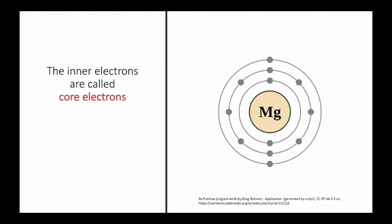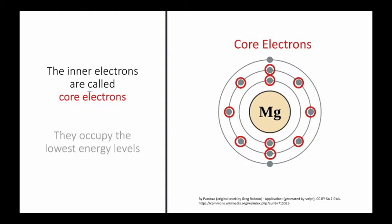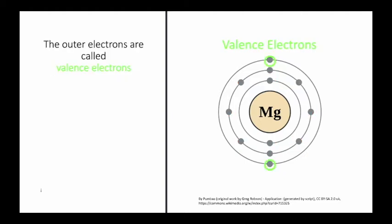The inner electrons are called core electrons. They occupy the lowest energy levels. The outer electrons are called valence electrons, and they occupy the highest energy levels.